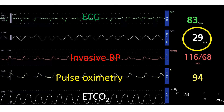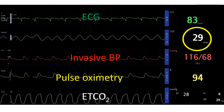Here the ETCO2 is shown as 28 mmHg. Respiratory rate drawn from the capnography is 29 per minute. The topmost tracing is electrocardiogram, which shows normal sinus rhythm at 83 per minute.